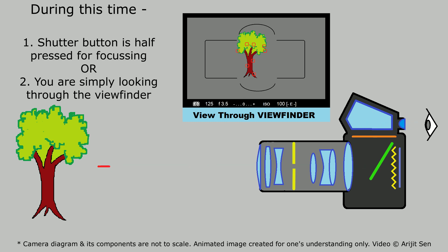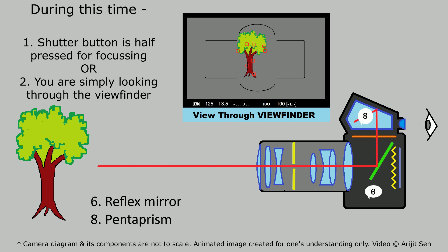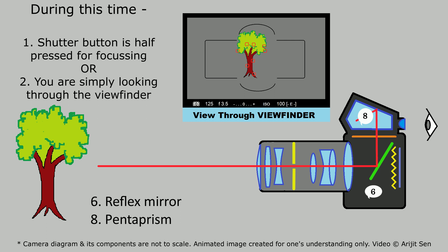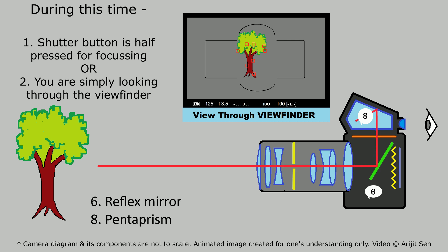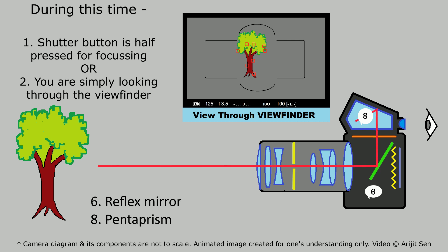Now let us understand what is happening when you are seeing through the viewfinder. At this point you can actually see the live view through it — but how does this happen? This is the time when you are half-pressing the shutter button for focusing on the subject. You can spot the tiny red rectangles on your screen through the viewfinder. This is when the light travels through the lens onto the reflex mirror, which reflects it upwards into the pentaprism through the focusing screen. After a series of reflections inside the pentaprism, the light reaches the viewfinder and we can see the live image.